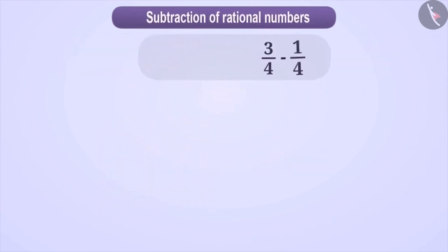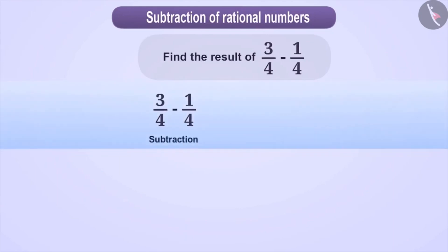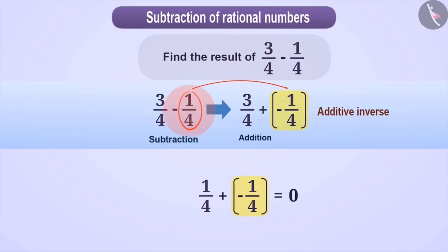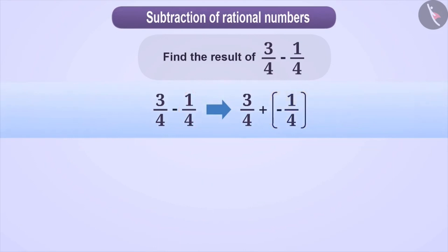Let's find the result of 3/4 minus 1/4. To find the result, we convert the operation of subtraction into the operation of addition. For this, we keep the first number as it is, then change the sign of subtraction to addition, and then add the additive inverse of the second number. The additive inverse of a number is a number that when added to the given number results in 0. Here, the additive inverse of 1/4 is minus 1/4. Thus, we have converted 3/4 minus 1/4 to 3/4 plus minus 1/4.